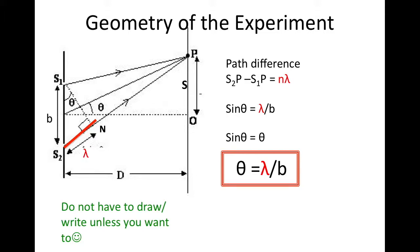And thus we get our equation of θ equaling λ divided by b. This equation states that the angular position of the diffraction minimum θ, located here, is proportional to the wavelength and inversely proportional to the width of the slit, which is b.